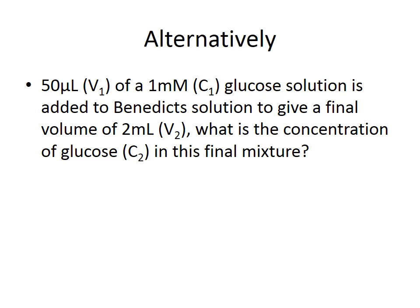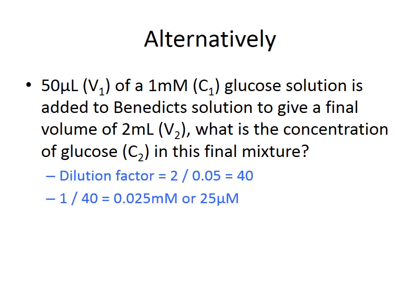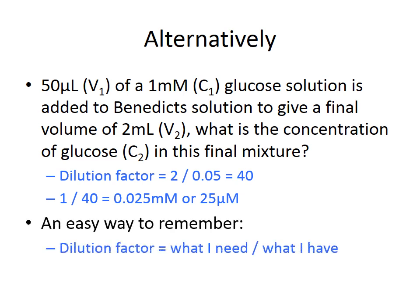An alternative approach is to work out the dilution factor: 2 divided by 0.05 millilitres gives a dilution factor of 40. Dividing the original concentration of 1 millimolar by 40 gives the same result — 0.025 millimolar or 25 micromolar. A useful way to remember dilution factors: the dilution factor equals what you end up with divided by what you start with.